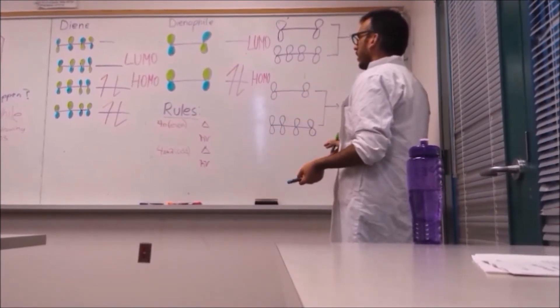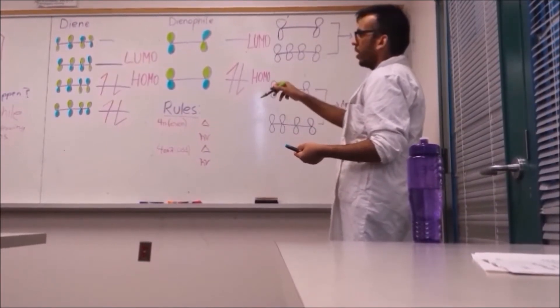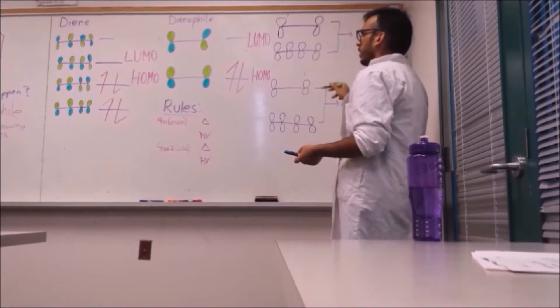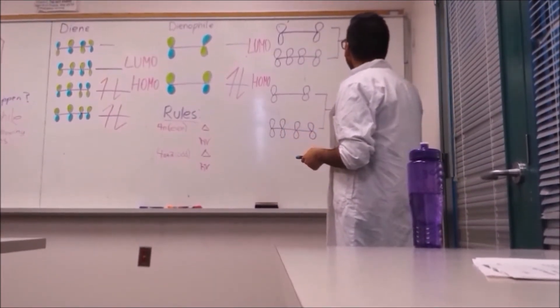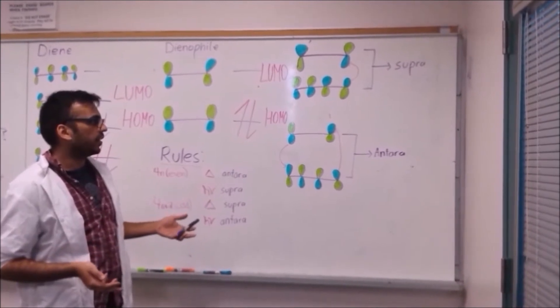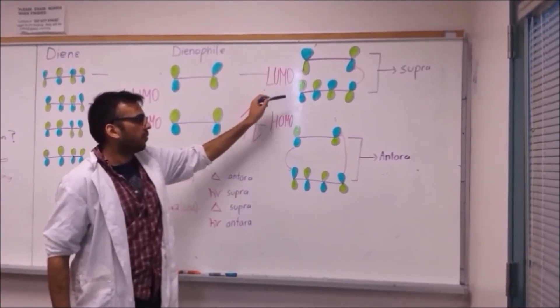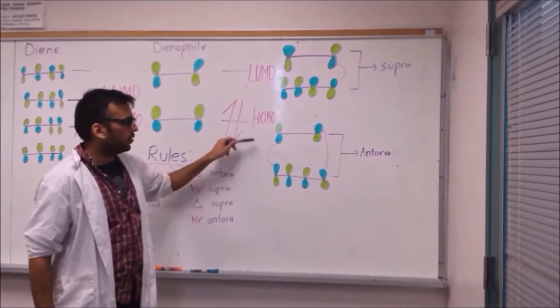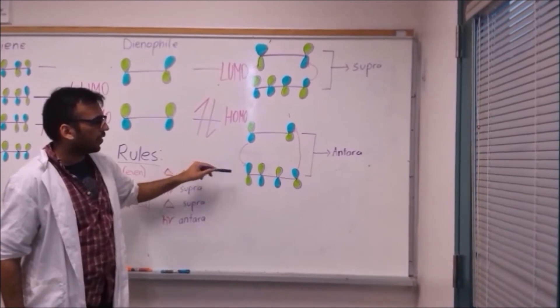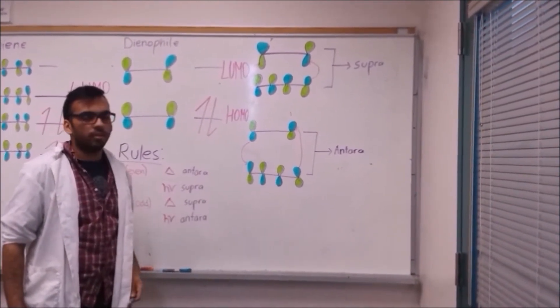Now this reaction involves the combination of the HOMO of one of the molecules with the LUMO of the other. It really doesn't matter as long as you have one HOMO and one LUMO. When we have the reaction going supra, all of the orbitals line up perfectly. However, when the reaction goes anterra, the orbitals do not line up perfectly, and these two orbitals will need to twist in order to line up and actually form the bond.